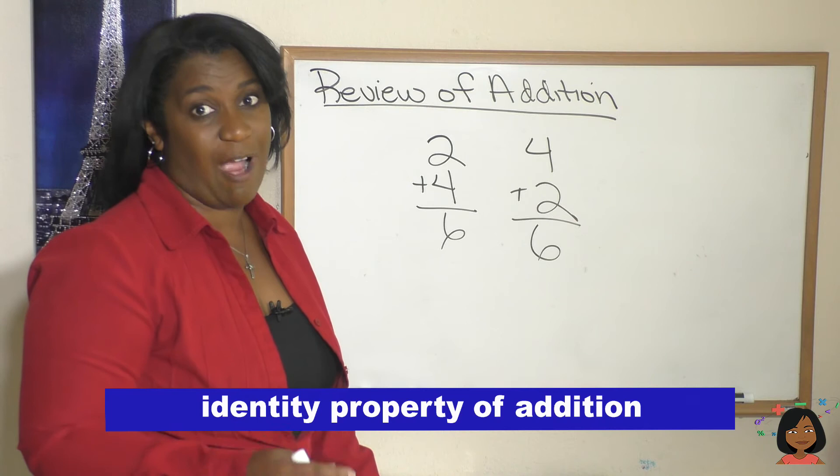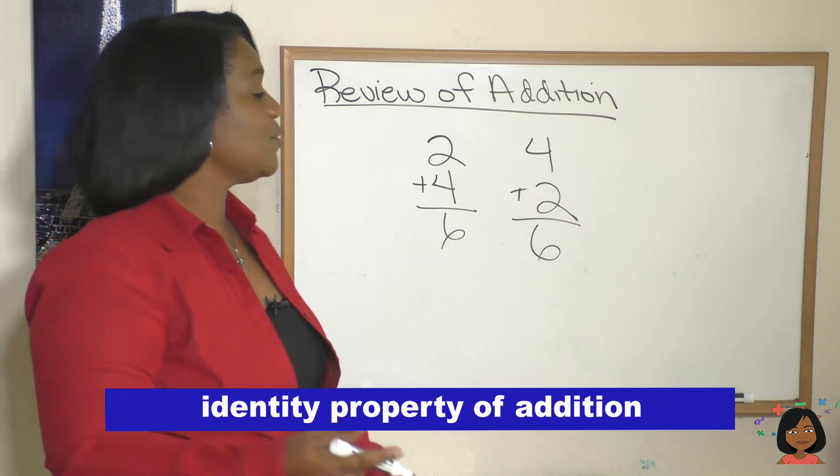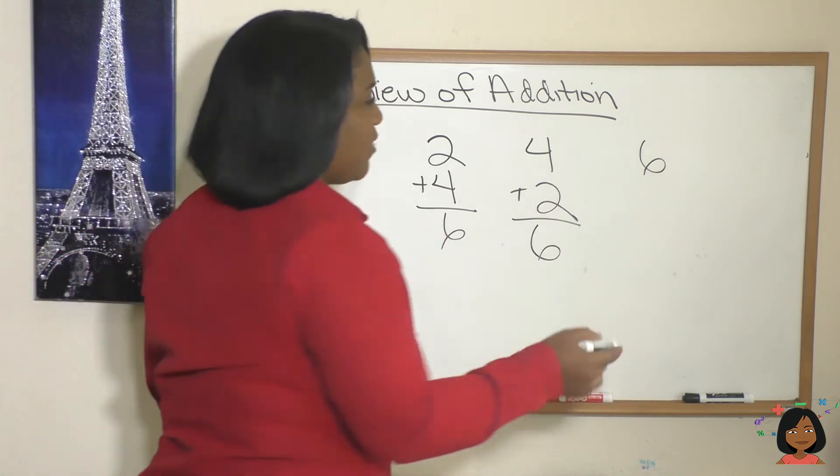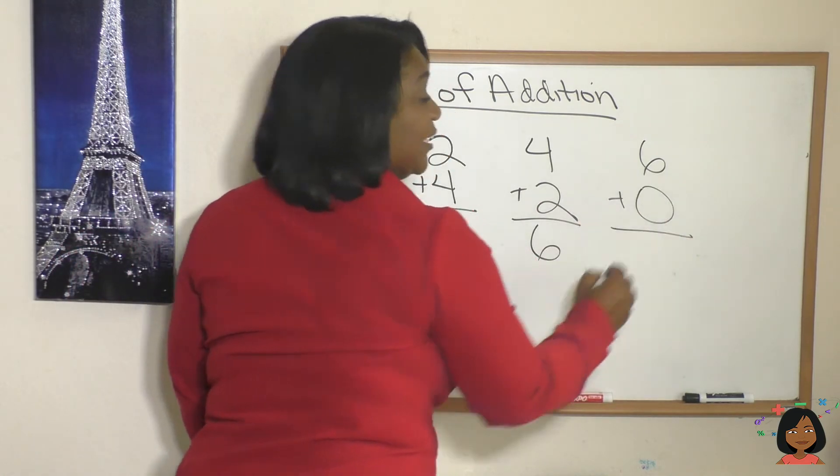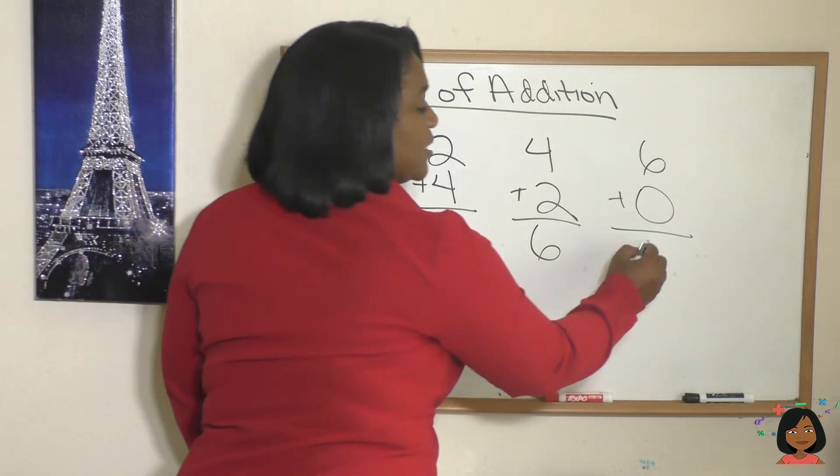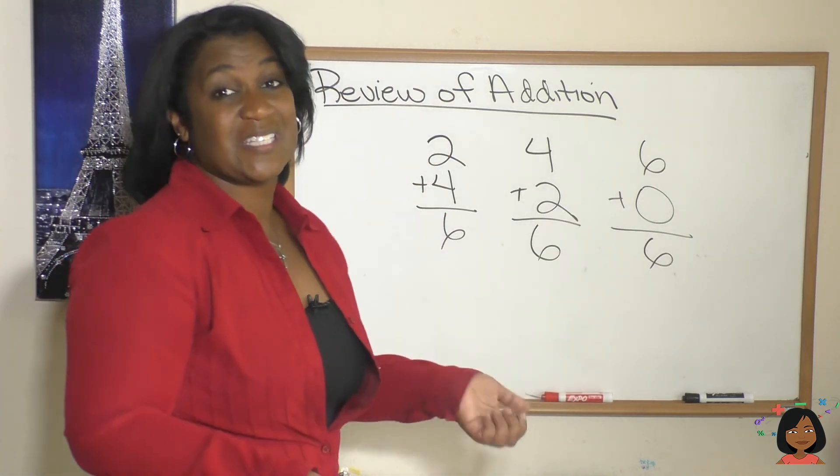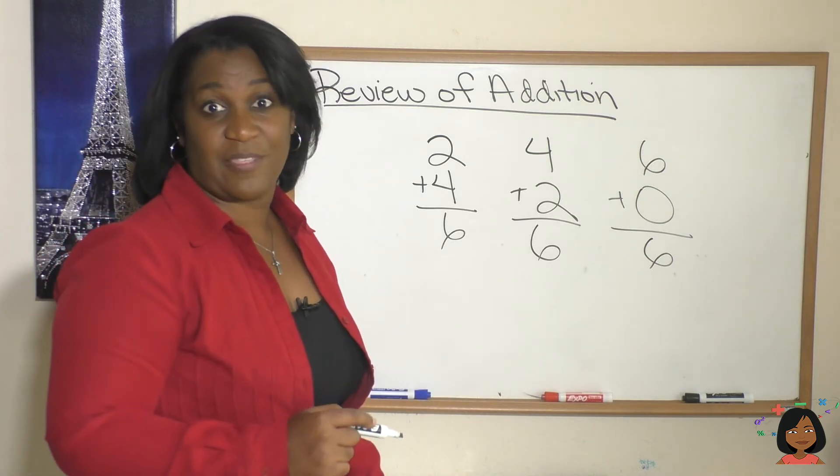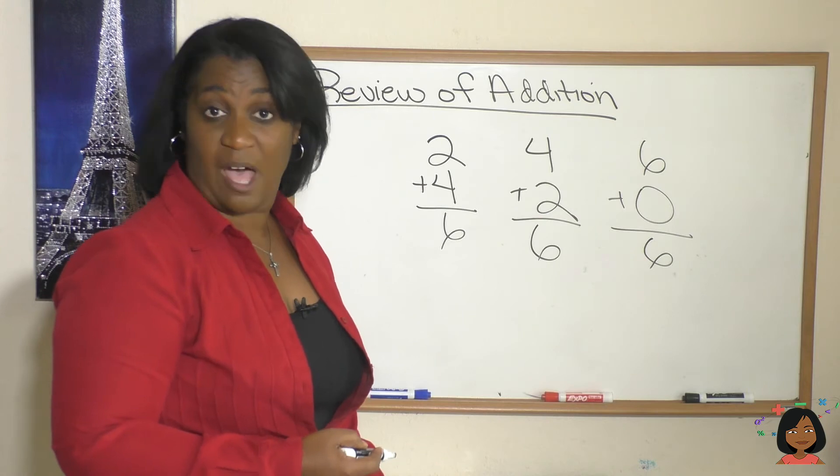There's also another property of addition. It's called the identity property of addition. It says if you take a number, let's start with six, and you add zero to it, we add nothing to it, so really we haven't changed anything. Our sum is still going to be six. So when we add zero to something, we get the identical number we started out with. That's the identity property of addition.